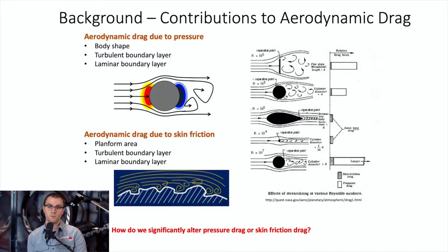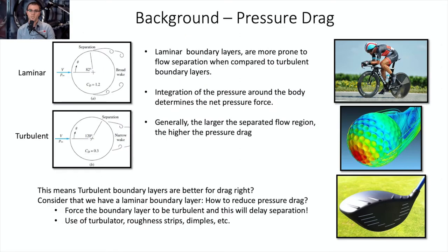To manipulate pressure drag and skin friction drag: for pressure drag, we take a laminar boundary layer and use turbulence generators — dimples or ridges — to energize it and cause transition to turbulence. That energized turbulent boundary layer stays attached longer, pushing the separation point further downstream and reducing pressure drag. Generally, a larger separated flow region means higher pressure drag, so we manipulate that region using roughness strips or tape.